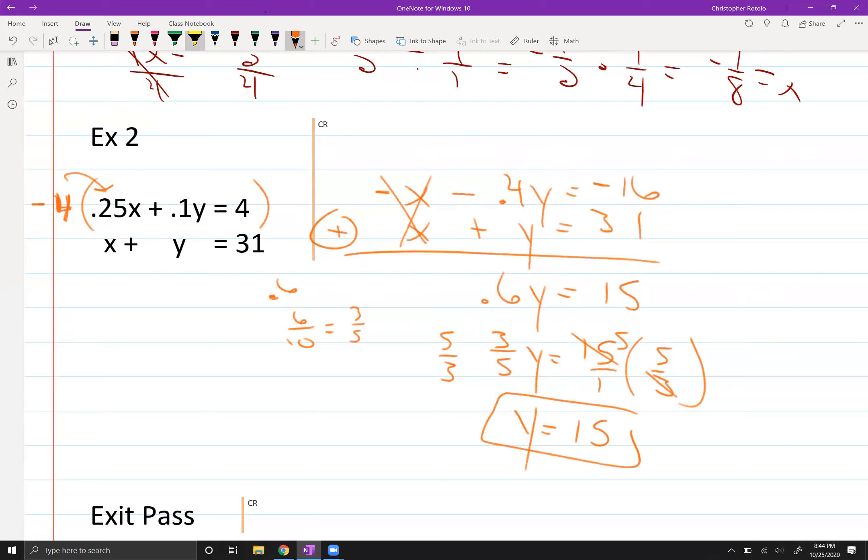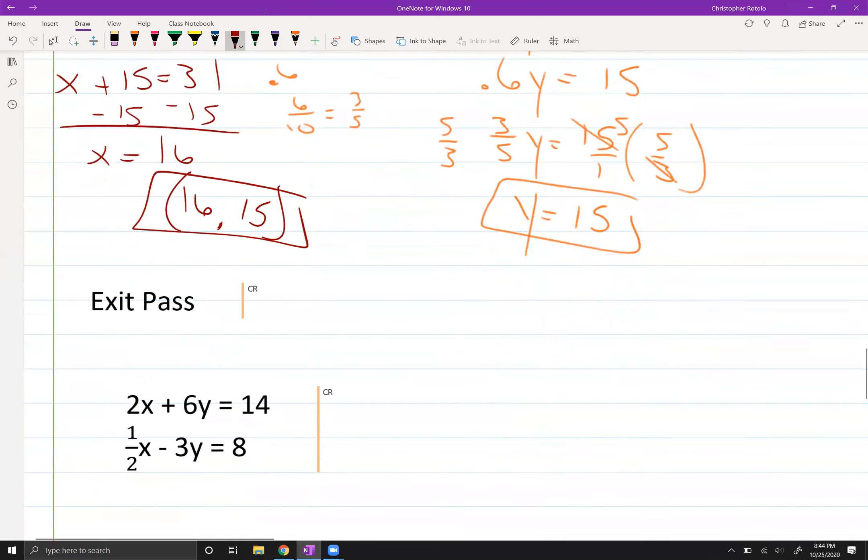Now, if I was a gambling man, what I would say is you're all going to use this bottom equation to sub it back in to get the other one. Now, some of you might just be spiteful and say, nope, I'm going to use the other one. But go ahead. That's up to you. So the y value turned out to be 15. So that's what we're solving for x now. So we got 16, 15. Ordered pair.